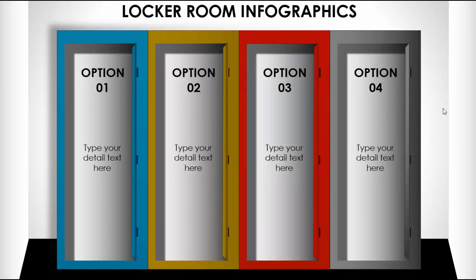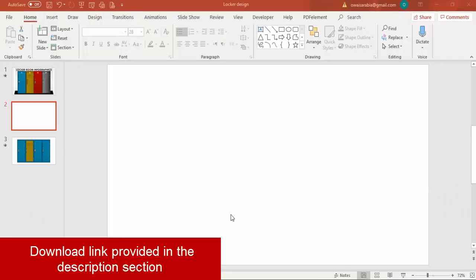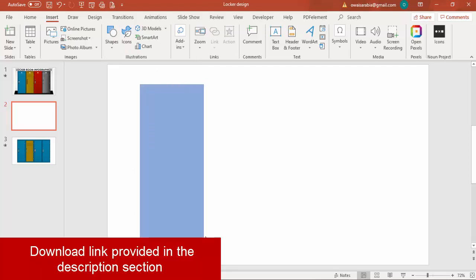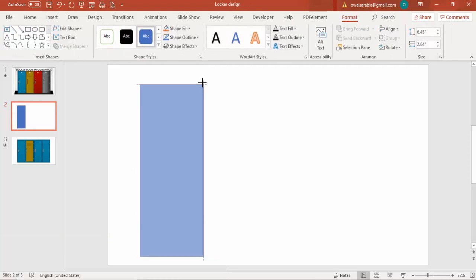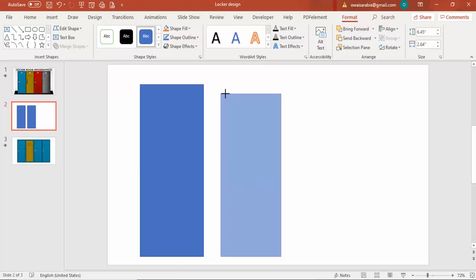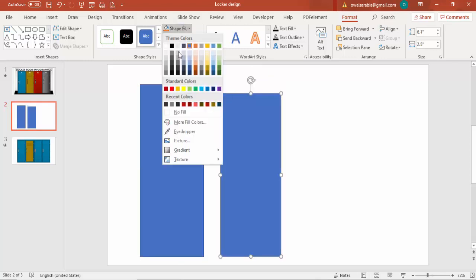This is a very unique and creative slide — let's see how to do this in PowerPoint. Add a new slide, go to Insert > Shapes, select a rectangle, and draw a rectangle of any size. We can increase or decrease the size later. Press Ctrl+D to duplicate it, reduce the size by holding the Shift key, and give it a different color.